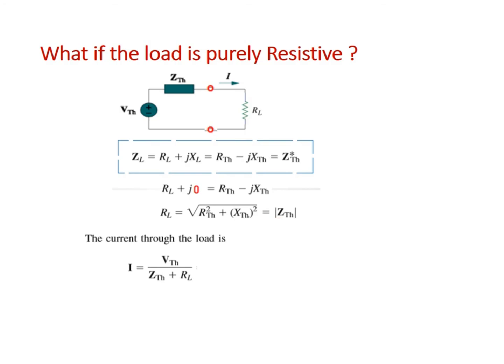We can find the current through the circuit. I equals V_Thevenin over Z_Thevenin plus R_L. Once we have the current, we can find the maximum power by one-half I squared R_L. This is the technique we use for a pure resistive load.